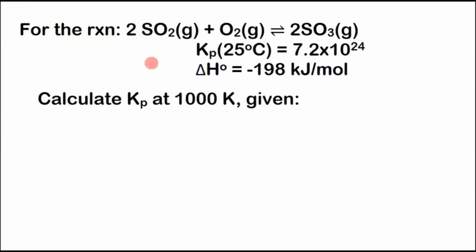Here's our first exam problem. For the reaction 2SO2 gas plus O2 gas is in equilibrium with 2SO3 gas, we have an equilibrium constant for pressures at 25 degrees Celsius of 7.2 times 10^24. This is very large, that's huge. And an enthalpy change, a standard reaction enthalpy at one bar, equals negative 198 kilojoules per mole. We want to know what the equilibrium constant at 1000 Kelvin is.